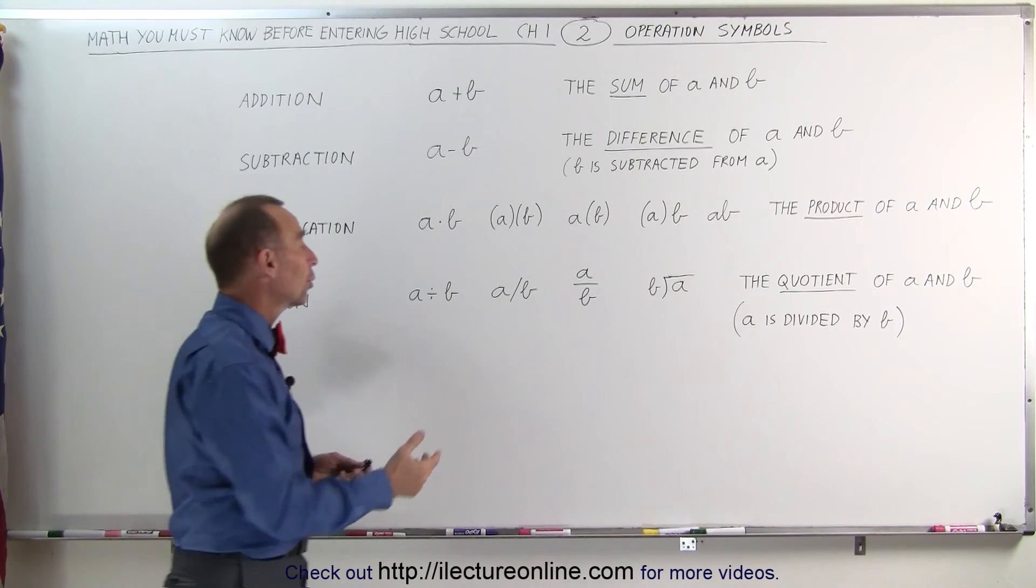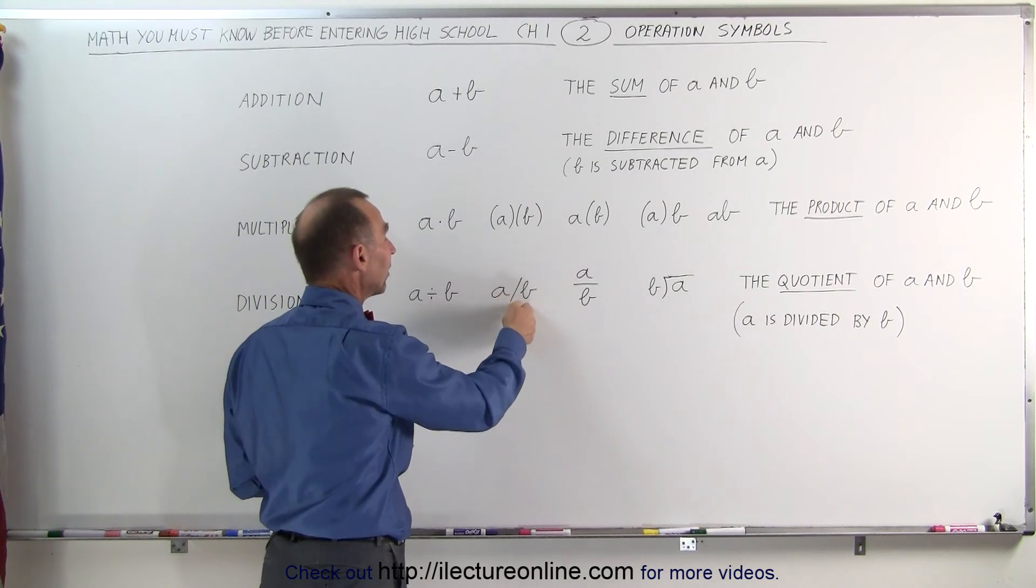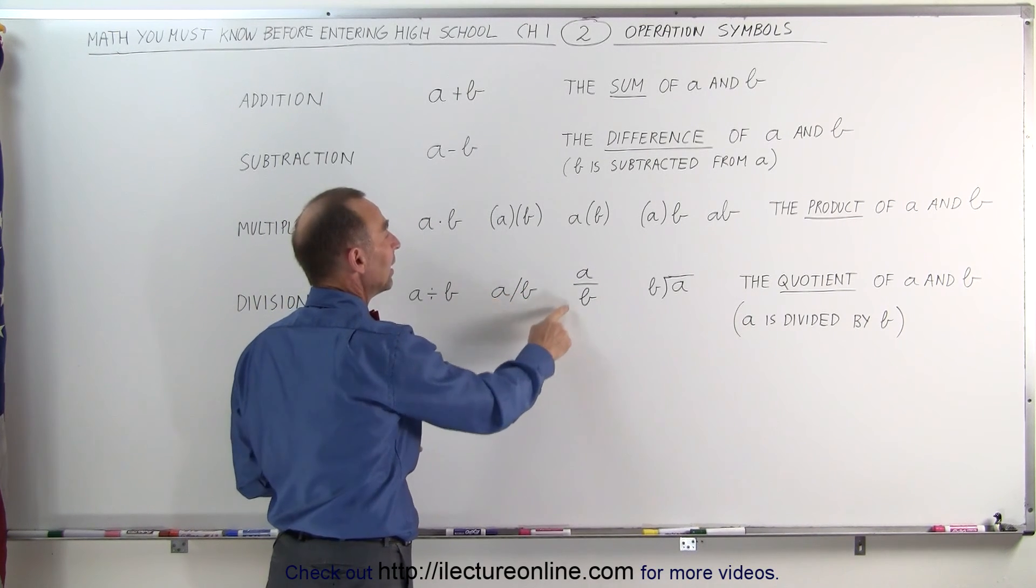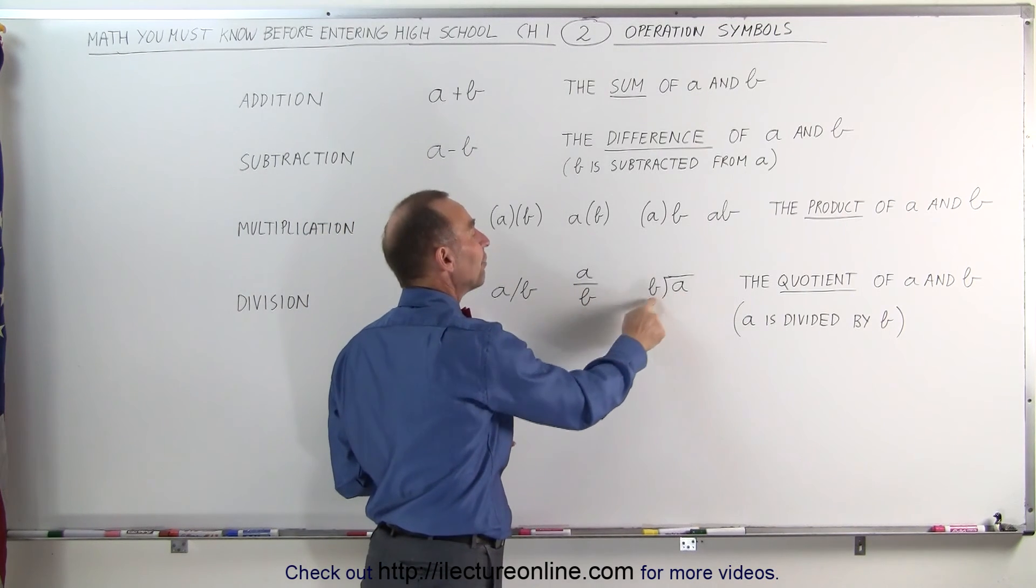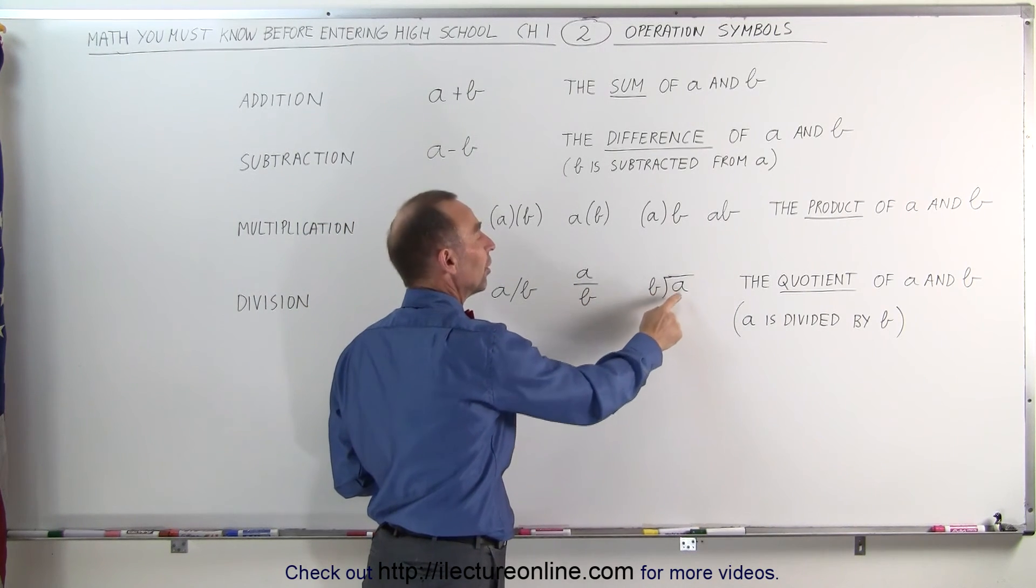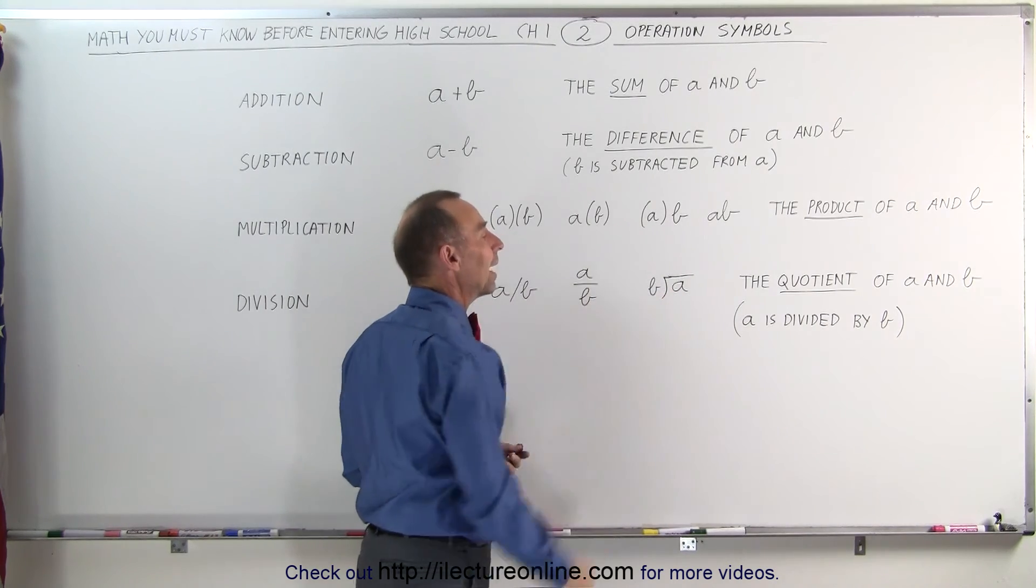Other ways of writing the quotient: a with a line like this, this means a divided by b. This also means a divided by b and this also means a divided by b. If you want to reverse it you put b there and put a there, that means b divided by a.